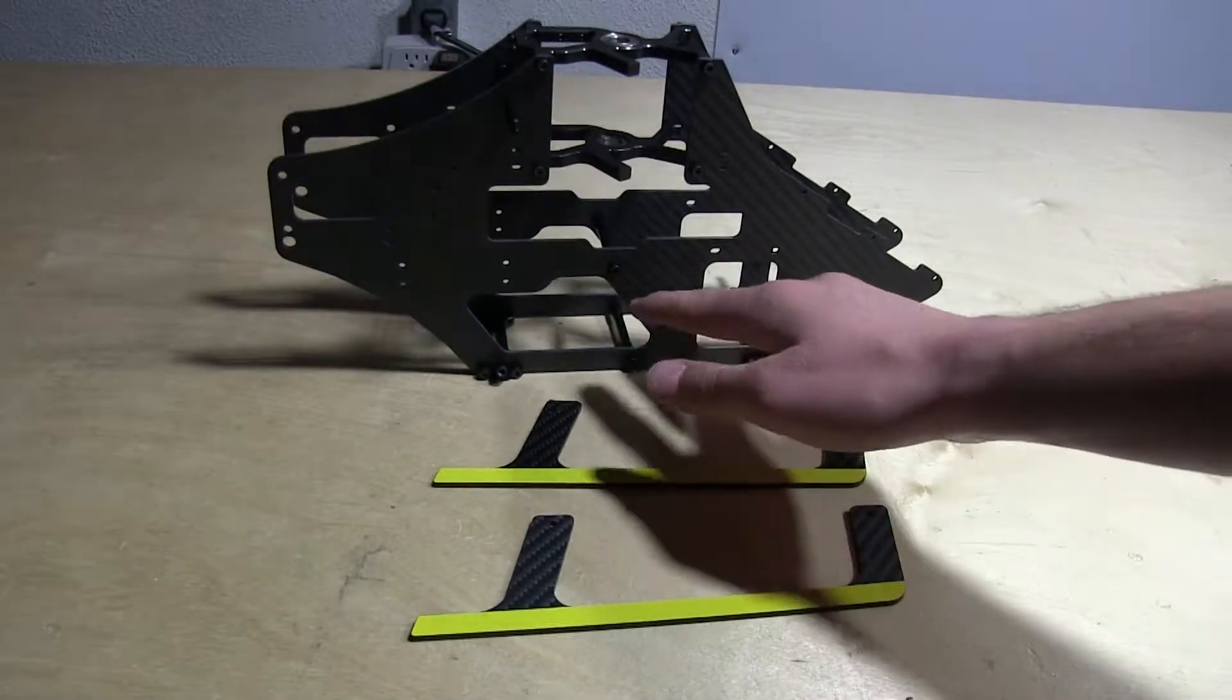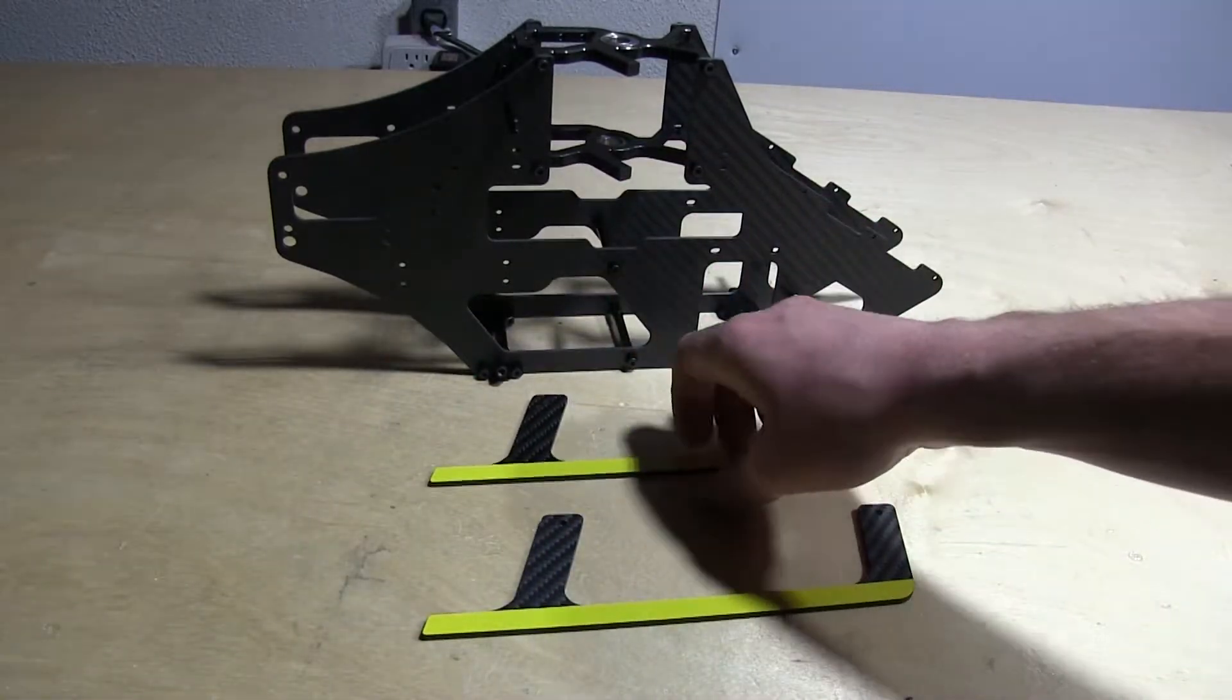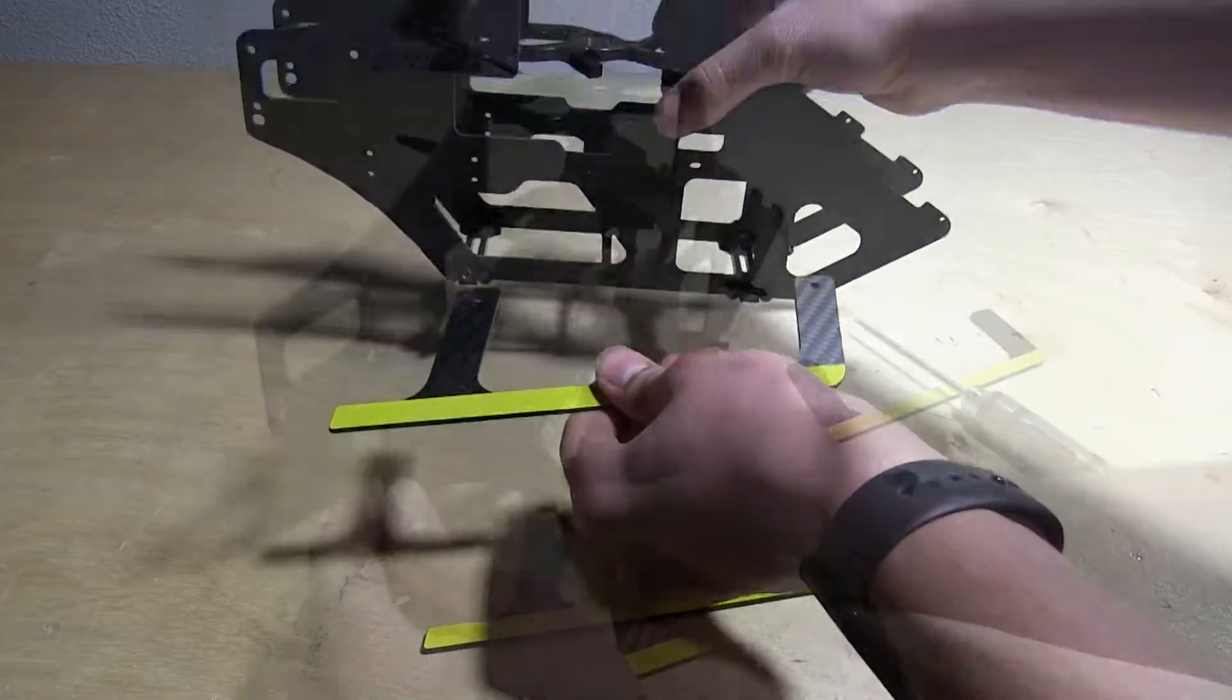Up next let's go ahead and put the skids on the frame. This will be very easy. It's just four screws going onto the frame like so. Those will just be going right here.